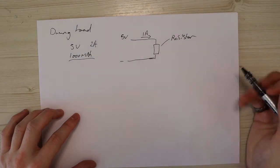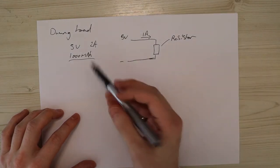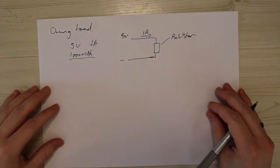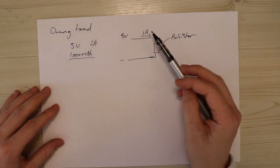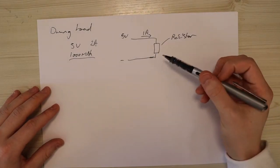Of course it might be less, it might be more, depends how accurate this number is over there. So from this we've got our simple circuit here. We know our volts, we know we need to draw 1 amp. So what resistor will we use?